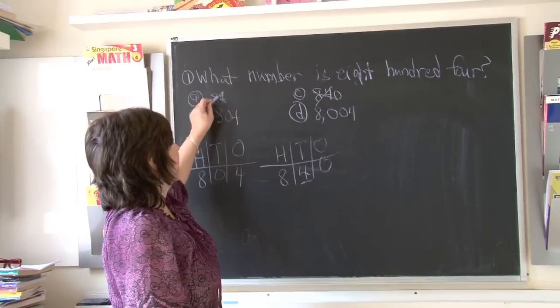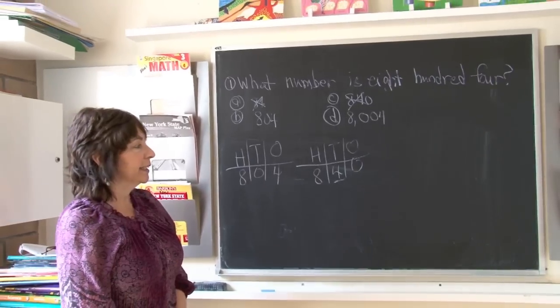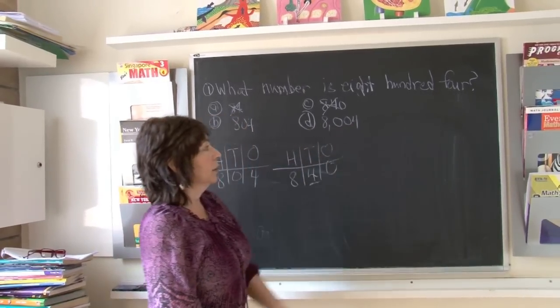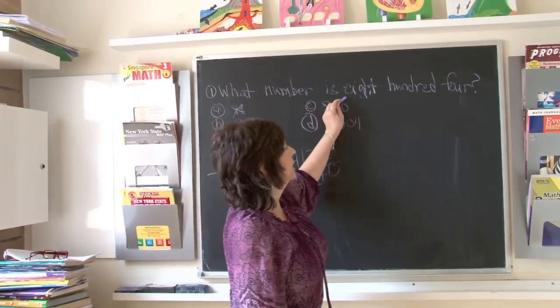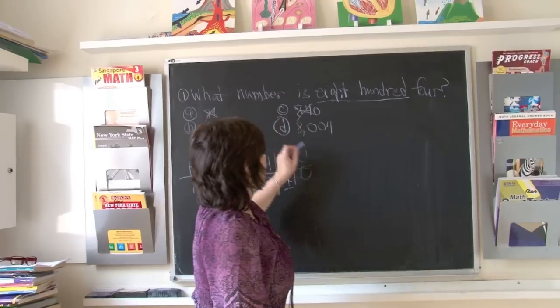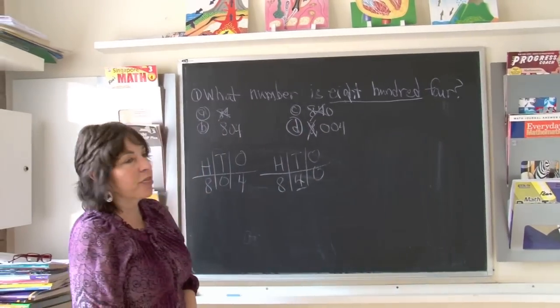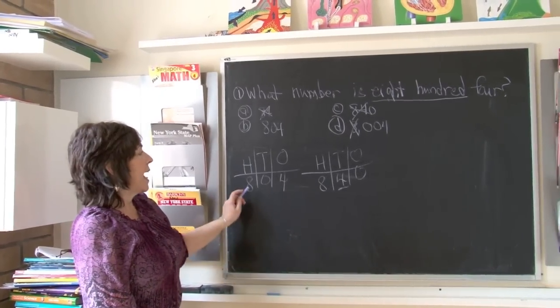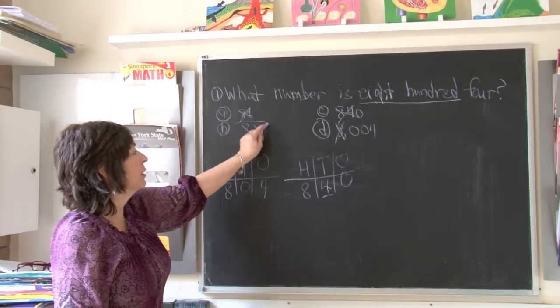Now if you look at D, it says 8,004. Up here it says 804. So there was no room for the thousands column. So the correct answer is 804.